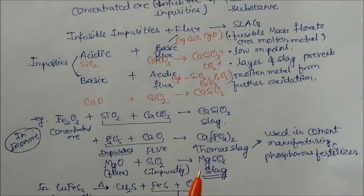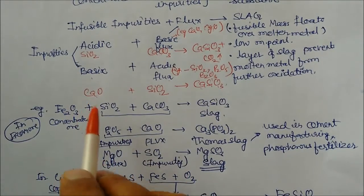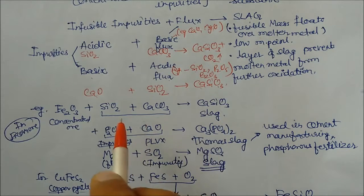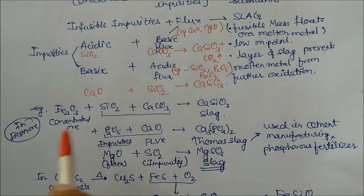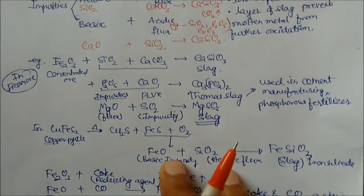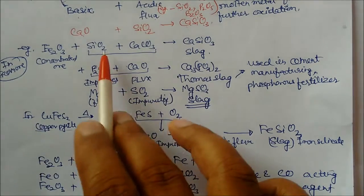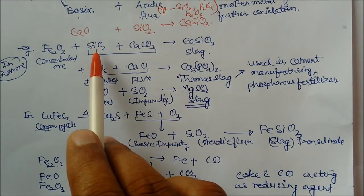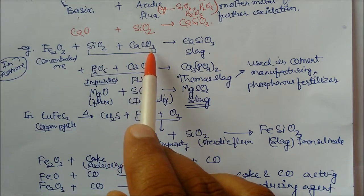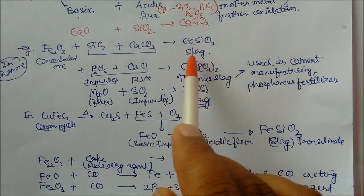Now let us see how this will help in removing this impurities as a slag with the help of flux. So in iron ore, Fe2O3 is there. It contains silica oxide as acidic impurities. So here we are adding calcium carbonate flux. So this will become calcium silicate.